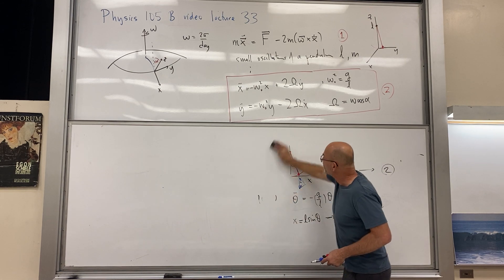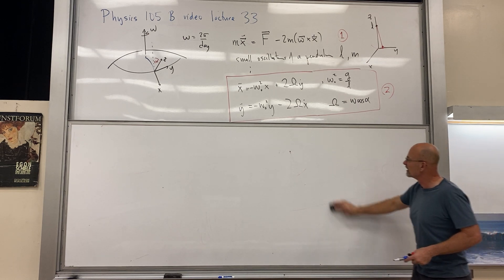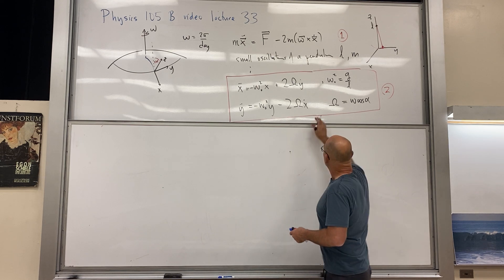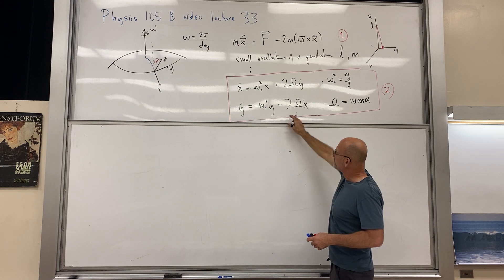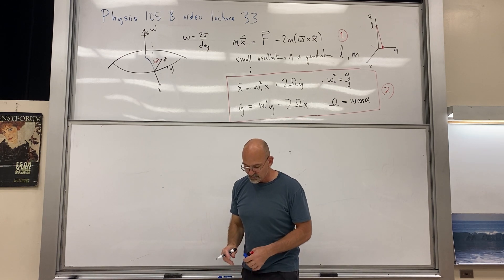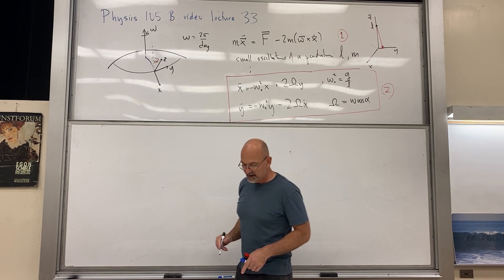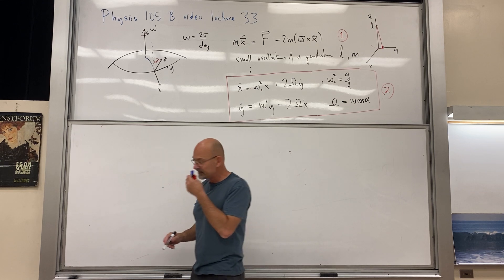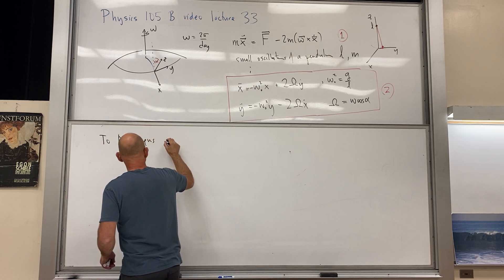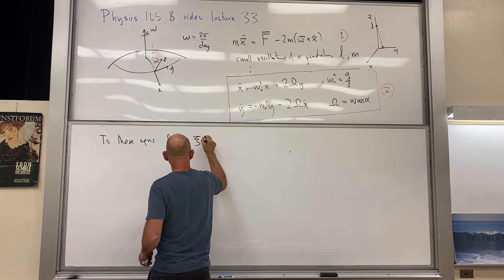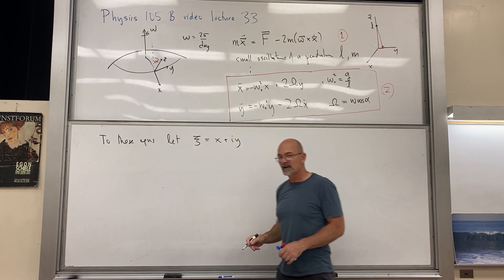Let's go on and solve this set of equations. These are linear constant-coefficient coupled equations, so we've been here before. To solve them, let c equal x plus i times y — we're going to go into the complex numbers again. We take the first equation plus i times the second equation.